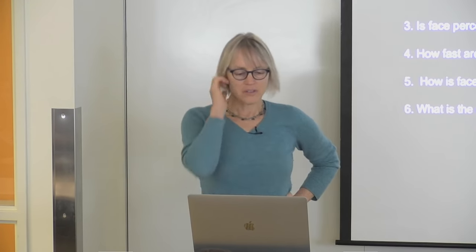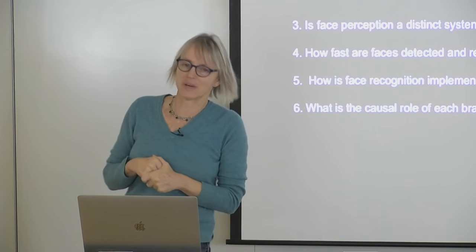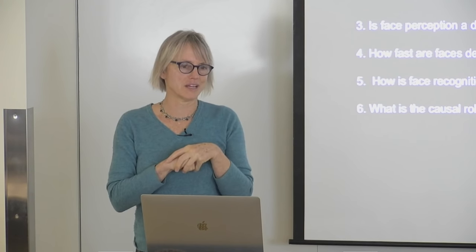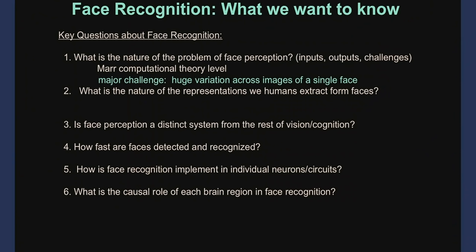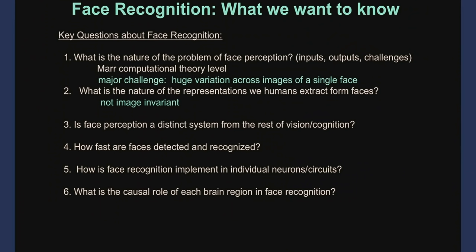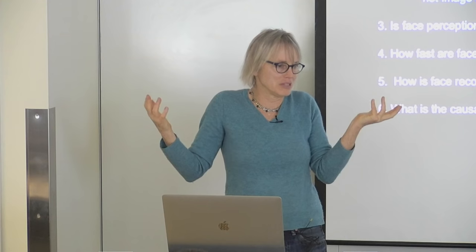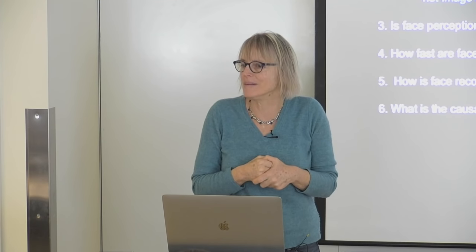Where did we get last time with these questions? One of the major, if not the major, central challenges in face recognition at a computational level is the fact that we deal with huge image variation each time we see a face, and yet somehow we're able to grapple with it. To understand how face recognition works would be to understand what is the code running in our heads that enables us to do that. By looking at behavioral data from the Dutch politician study, whatever representation we extract from faces is not independent of the particular image — it's not some Platonic ideal we can extract from any face that lands on our retina.